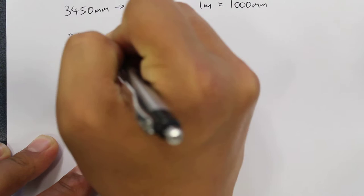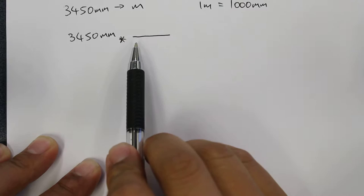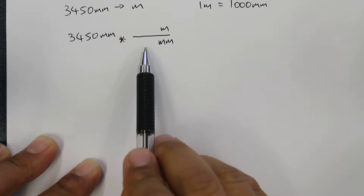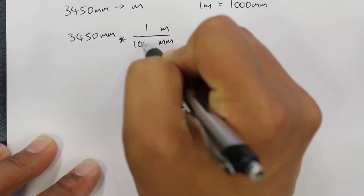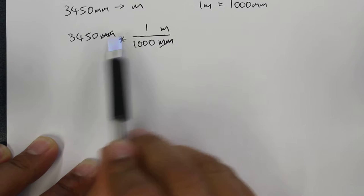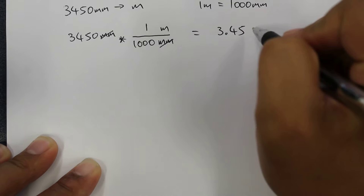So one way we can solve this question is using the elimination method. So we have 3450 millimeters and we can multiply this by a one, and this is a special kind of one. And this is where we've got the millimeter unit on the bottom, the meter unit in the top. We place values which are equivalent to each other. So we know that one meter is equal to 1000 millimeters. So here the millimeter units will cancel. We are left with the units of the meter and then we can deal with the numbers here. So 3450 times 1 divided by 1000, we get 3.45 and then the units we're left with is the meter.